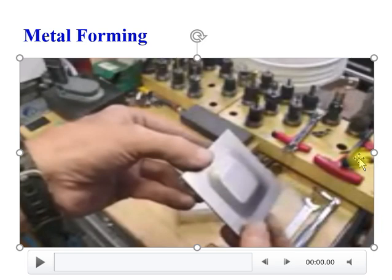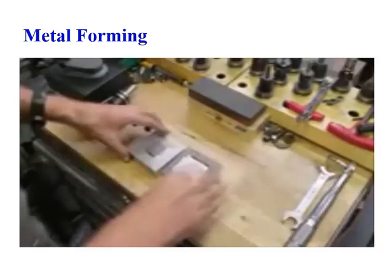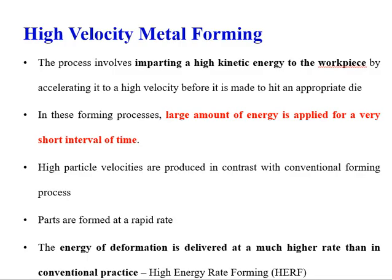The third condition is how big a feature you can generate using conventional metal forming. To make a bigger product, you need a bigger punch and die system, and accordingly a larger machine to accommodate the whole assembly — all of which adds to the cost. So in that aspect also, conventional metal forming has its own limitations.